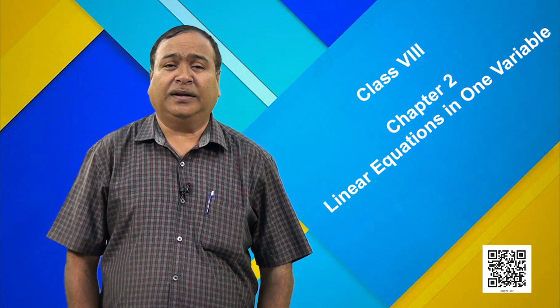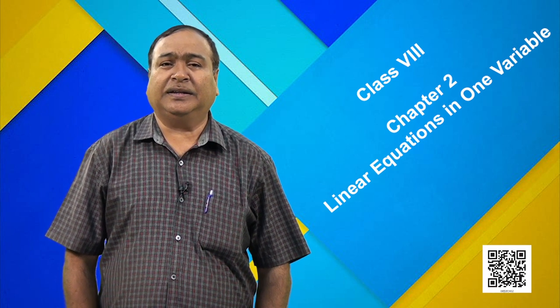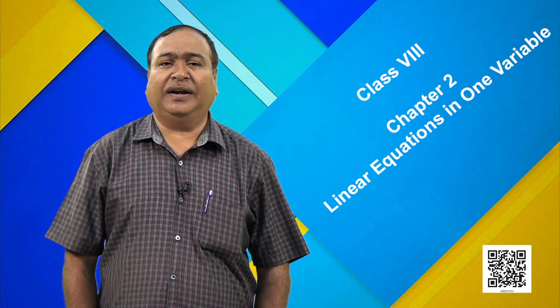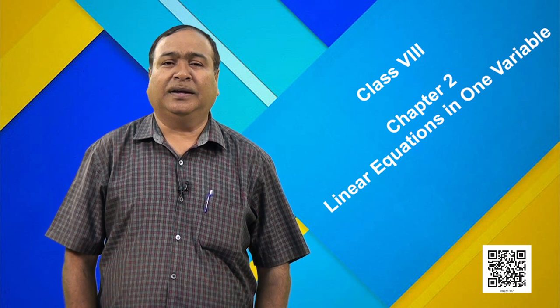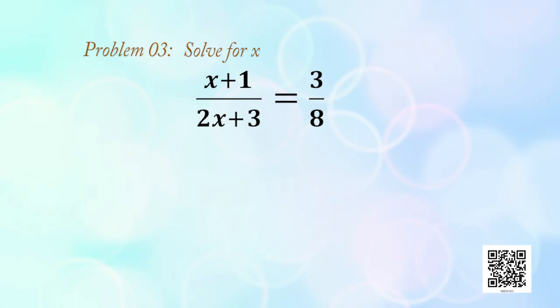Students, note that sometimes the given equation may not be linear. In that case, by converting it into a linear equation we can find the solution by applying our previous methods. Let us solve one such example. Solve (x + 1)/(2x + 3) = 3/8. Observe that the equation is not linear since the left hand side expression is not linear, but it can be converted into linear form.